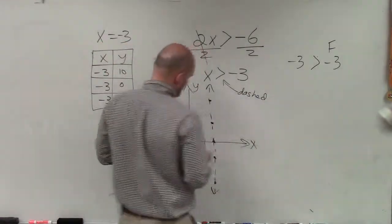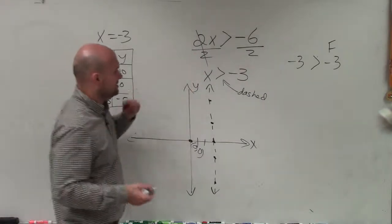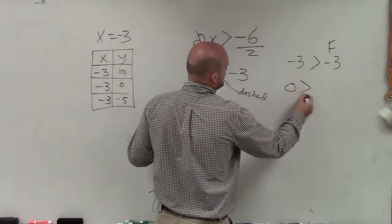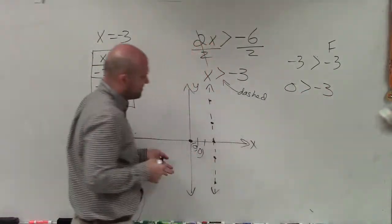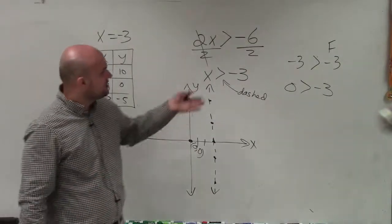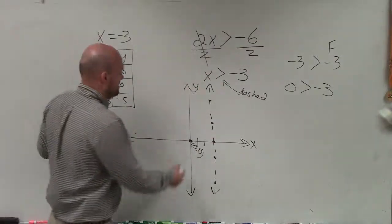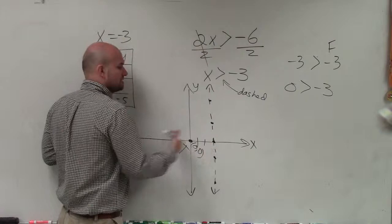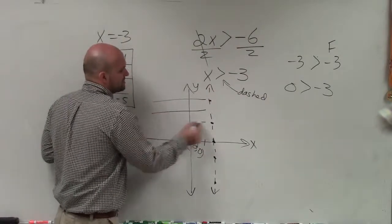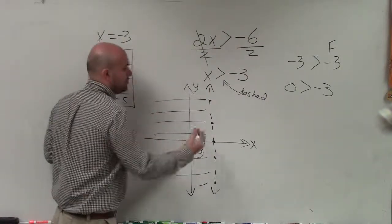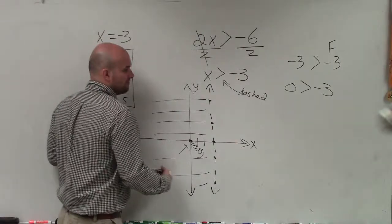So then the only coordinate, again, that we can plug in is x. So I'll plug in 0 is greater than negative 3. I don't have anywhere to plug in my y-coordinate. It doesn't really matter. 0 is greater than negative 3. That is true. So since it's true to the left of the line, that means all points to the left of the line are going to be true. And that means all points to the right of the line are going to be false.